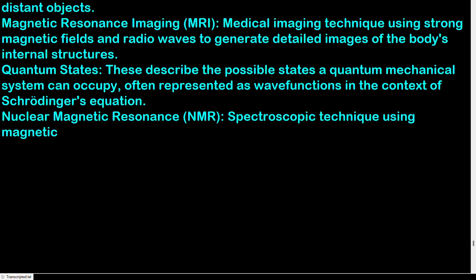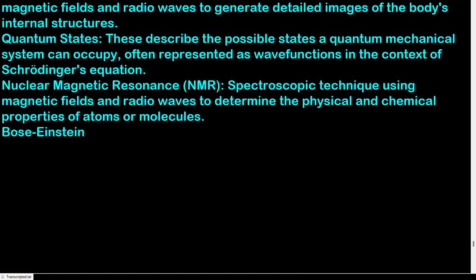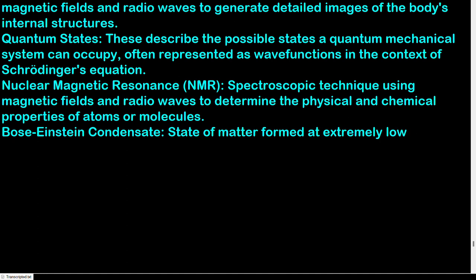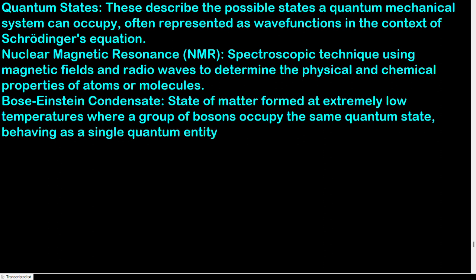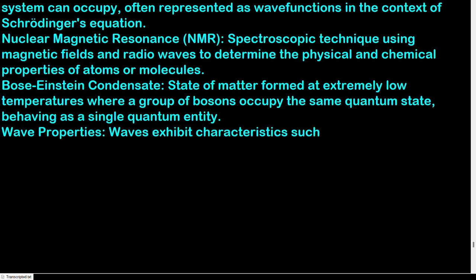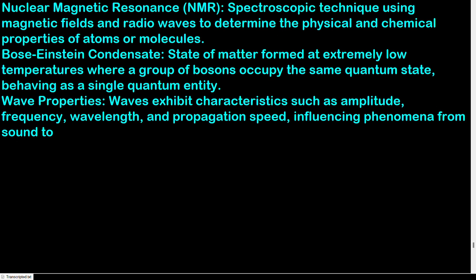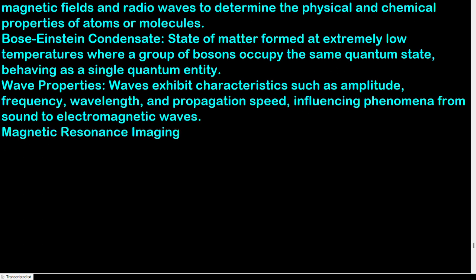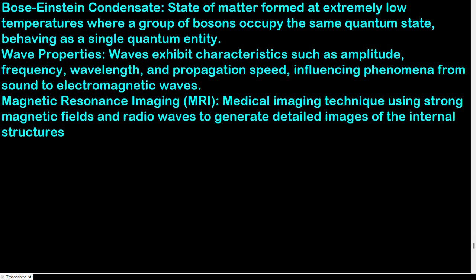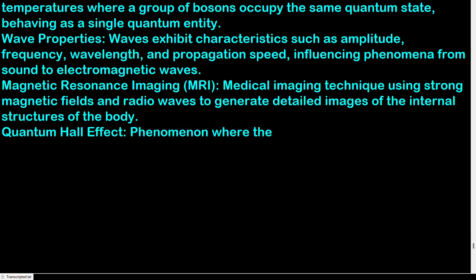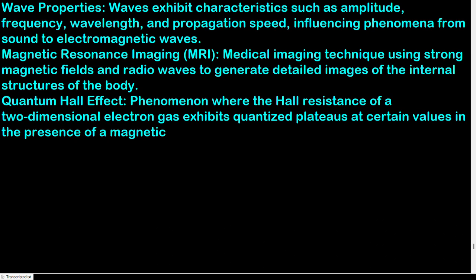Nuclear magnetic resonance (NMR): spectroscopic technique using magnetic fields and radio waves to determine the physical and chemical properties of atoms or molecules. Bose-Einstein condensate: state of matter formed at extremely low temperatures where a group of bosons occupy the same quantum state, behaving as a single quantum entity. Wave properties: waves exhibit characteristics such as amplitude, frequency, wavelength, and propagation speed, influencing phenomena from sound to electromagnetic waves. Magnetic resonance imaging (MRI): medical imaging technique using strong magnetic fields and radio waves to generate detailed images of the internal structures of the body. Quantum Hall effect: phenomenon where the Hall resistance of a two-dimensional electron gas exhibits quantized plateaus at certain values in the presence of a magnetic field.